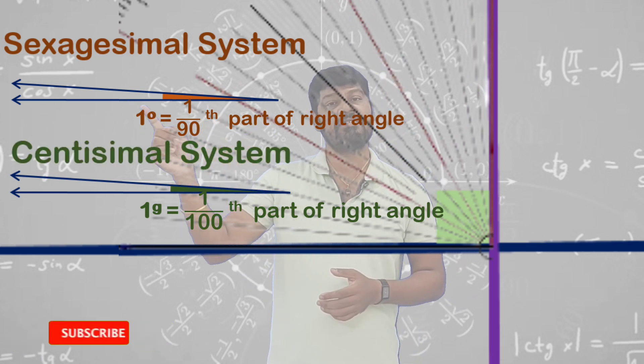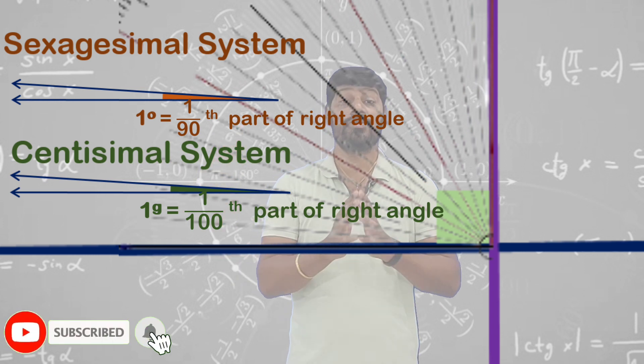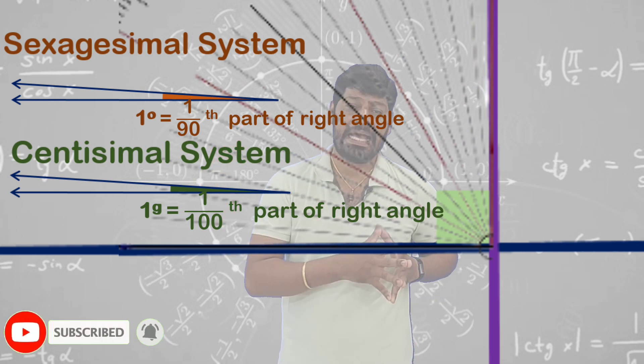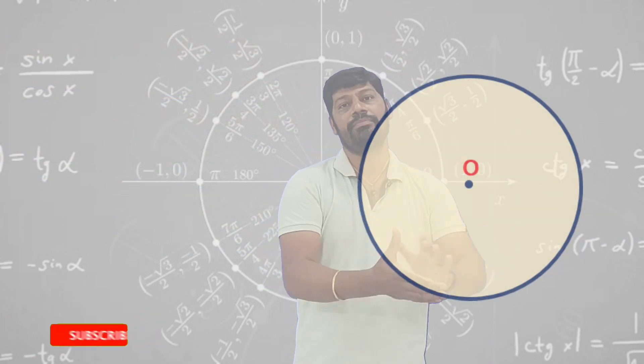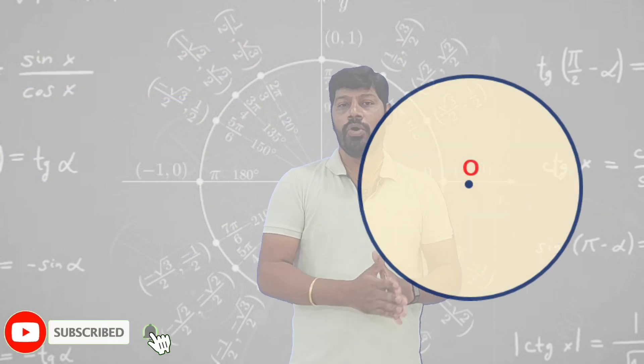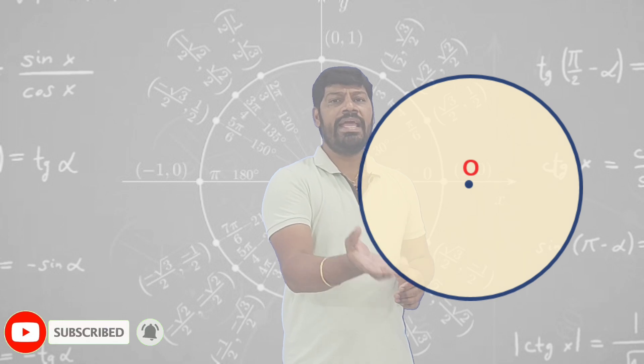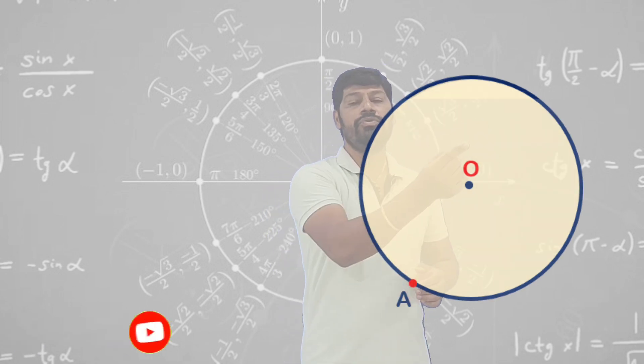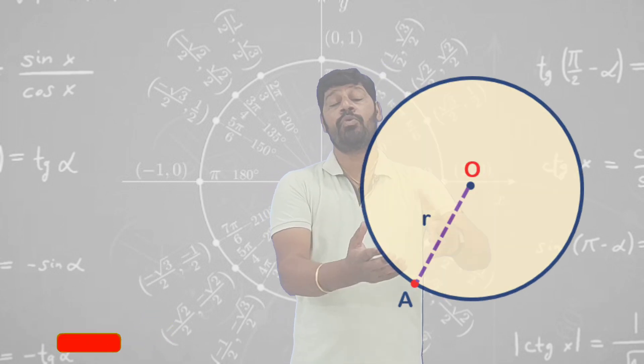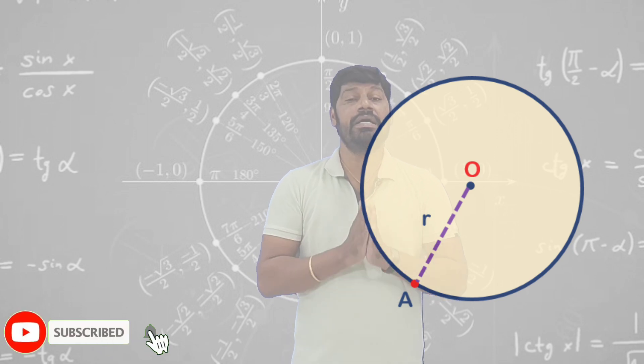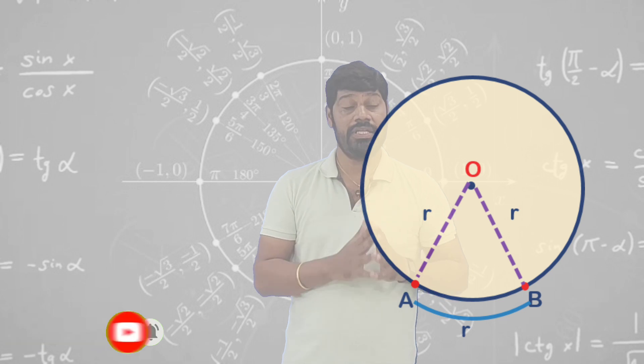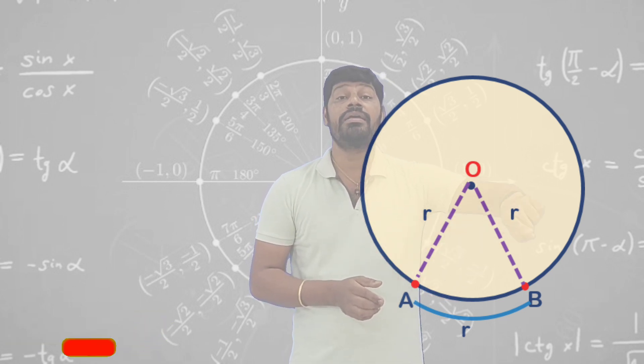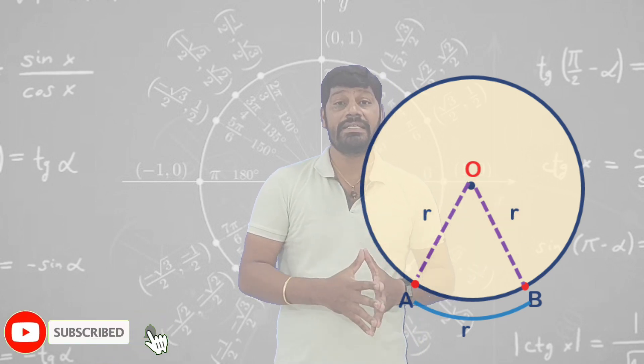Apart from these two systems, sexagesimal and centisimal, there is one more interesting way of measuring an angle. To understand that, we consider a circle with center O. Let me consider a point A on the boundary of the circle. If you join O and A, we know that OA will be equal to the radius. Now taking a point B on the boundary of circle such that length of arc AB equals radius.